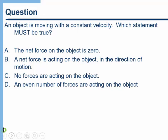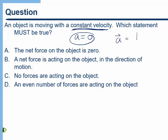In many physics problems, there's a key word or phrase that you want to focus on. In this case, it's the phrase 'constant velocity.' If the velocity is constant, that tells us that the acceleration is zero. If the acceleration is zero, Newton's second law says that the acceleration is equal to the net force divided by the mass, and therefore the net force has to be zero. So A is the correct answer.